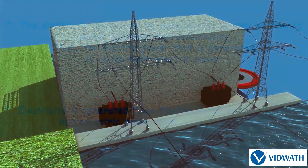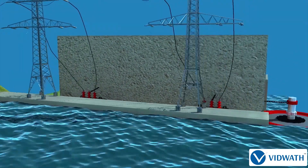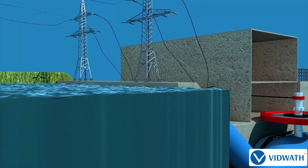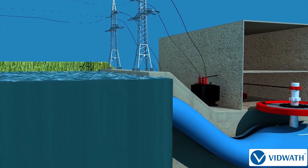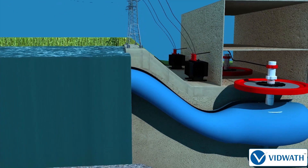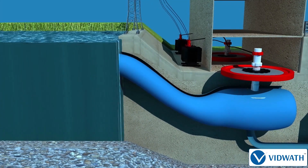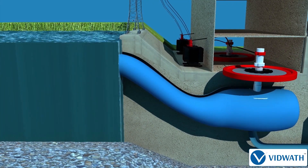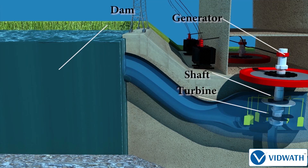Let us describe the working of a hydroelectric power plant. A high dam is constructed on one side of the reservoir to hold back the flow of water. The generator house is at the base of the dam, on its other side.